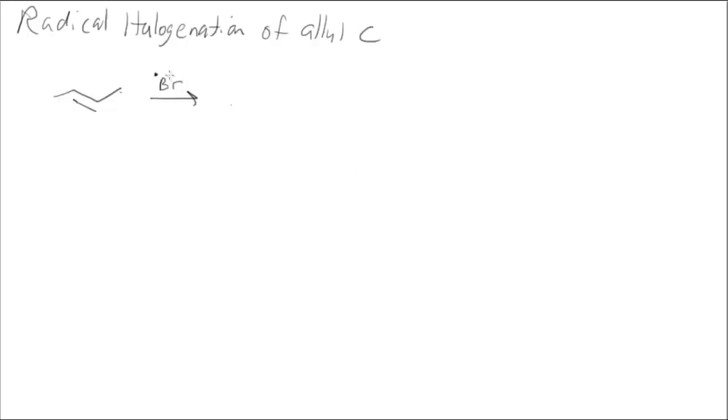Let's look at radical halogenation of an allylic carbon. If I want to figure out which hydrogen is going to come off, it's based on stability, which is going to give the most stable radical. If I take off one off of the alkene, I get this radical.